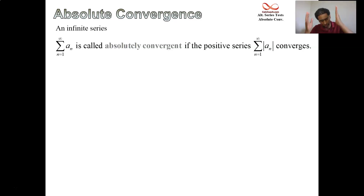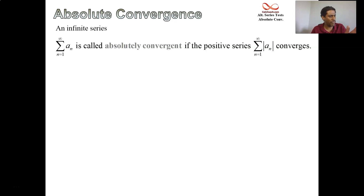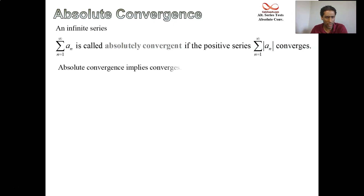Those absolute value bars serve to make every term positive, that's all. It's a stronger type of convergence, we'll see why in a few slides. There are two types of convergence we'll be concerned about: absolute convergence or conditional convergence. You converge absolutely if you take the absolute value and that gives you convergence — making every term positive gives you convergence.